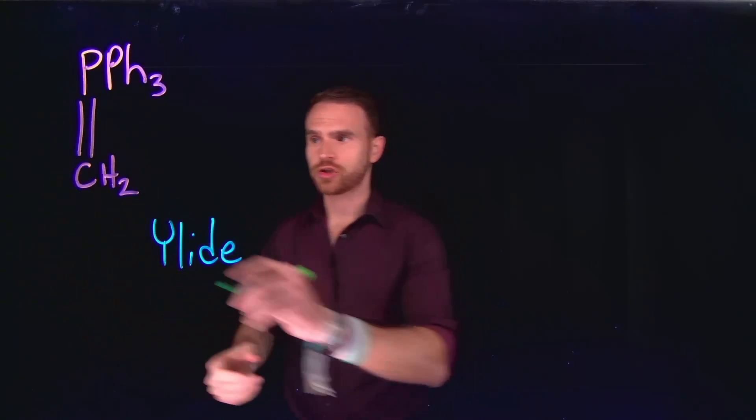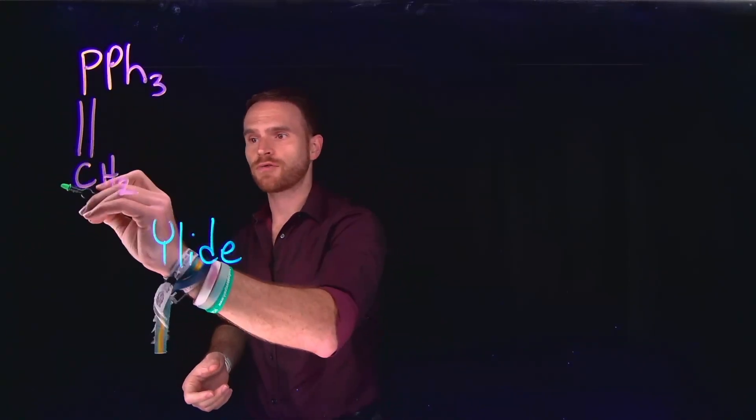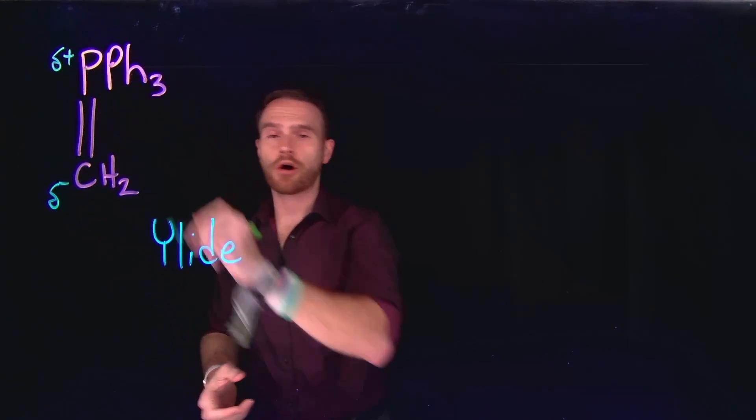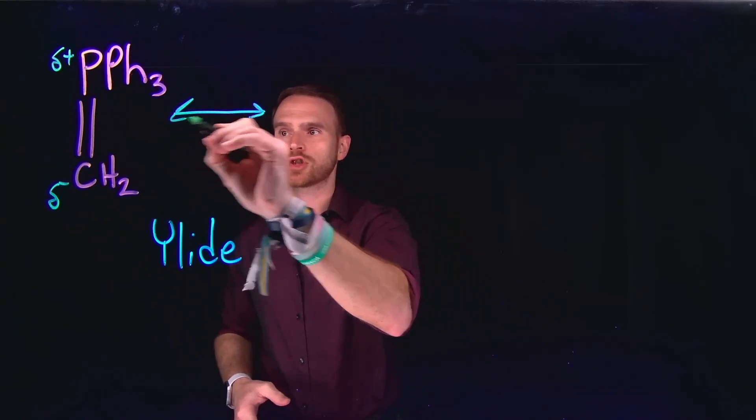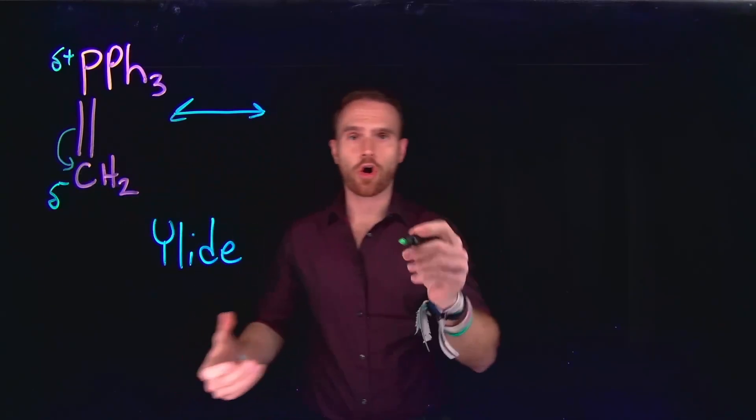When drawn in this resonance structure, we can see that due to the electronegativity difference between carbon and phosphorus, carbon is going to be partially negative, whereas phosphorus is going to be partially positive. However, we know that we can draw a resonance structure for this molecule where we place the electrons on the carbon atom.